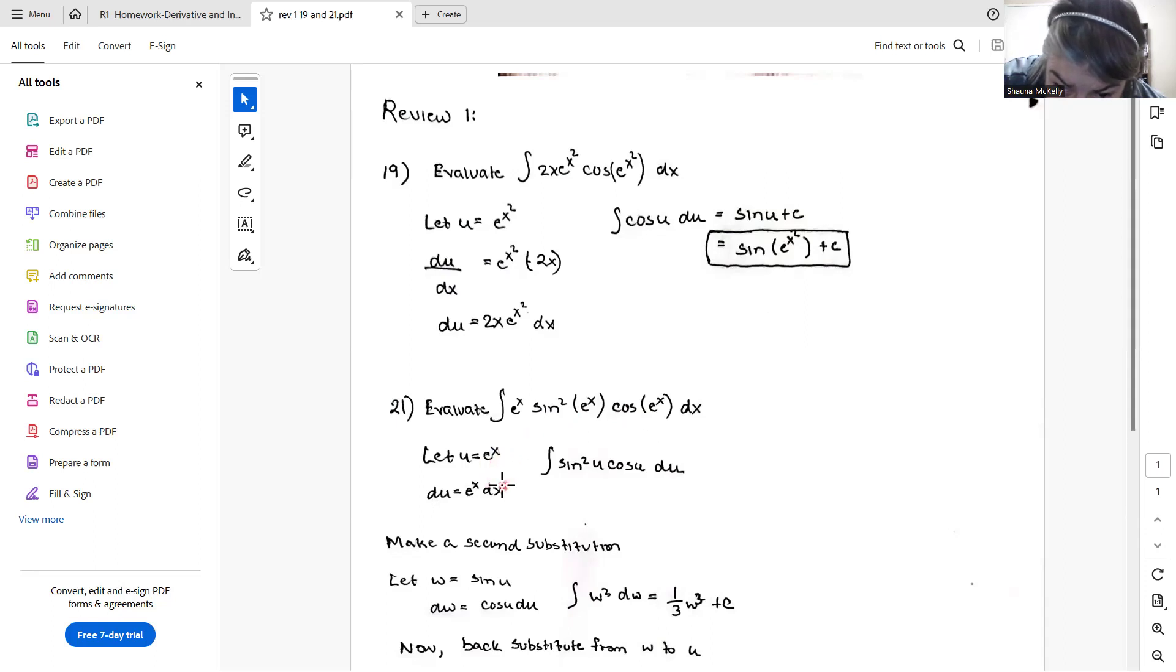Here I made a substitution. U is e^x. Again, because it's the argument of the trig function, it makes the most sense. Then e^x is its own derivative, so du is e^x dx. Now, e^x dx is du, which leaves me with the integral sin²(u) cos(u) du.